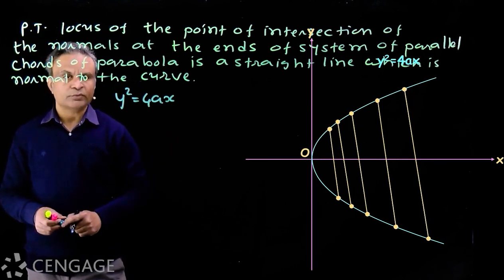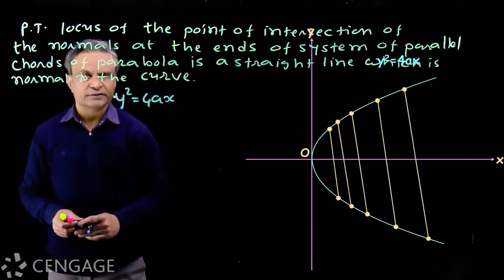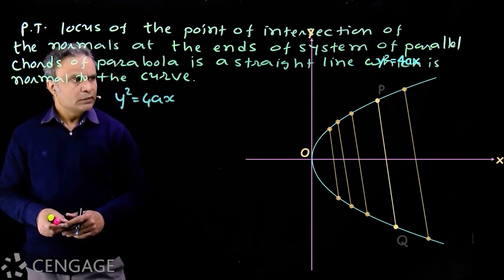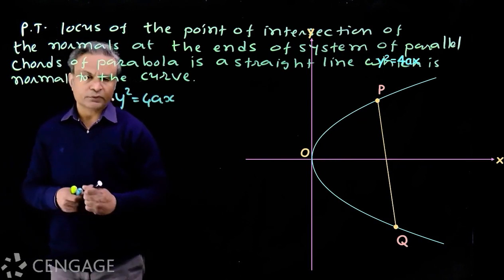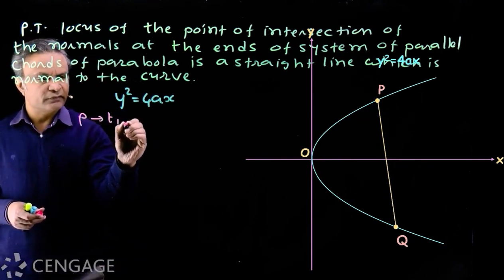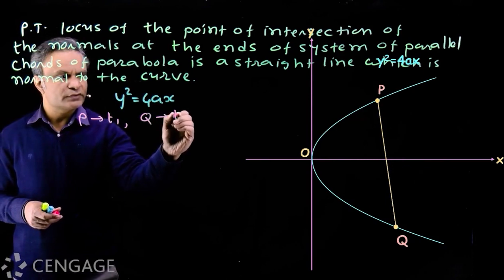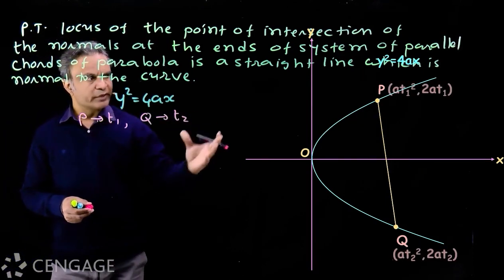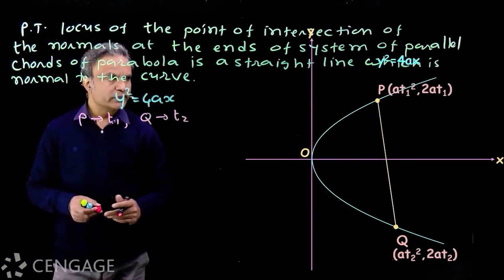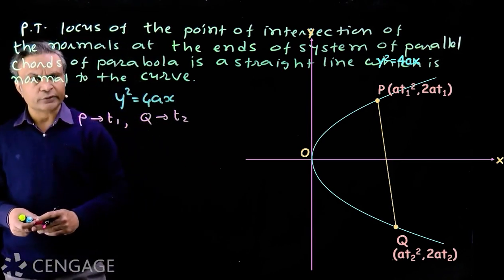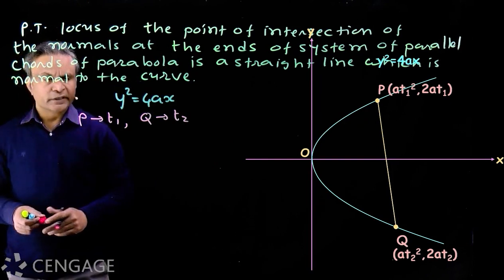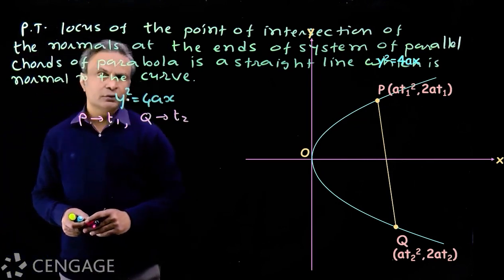By fixing the slope of the line, we can draw an infinite number of lines. Now consider one such chord which intersects the parabola at points P and Q. Suppose the parameter of point P is t1 and the parameter of point Q is t2. We have coordinates: P is (at1², 2at1) and Q is (at2², 2at2). Here t1 and t2 are variables but the slope of the chord is constant and fixed.